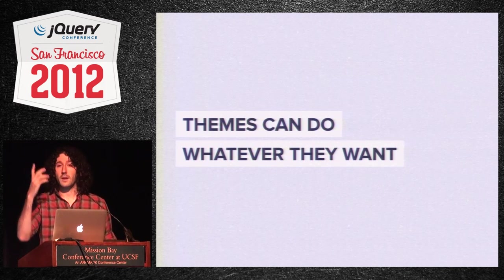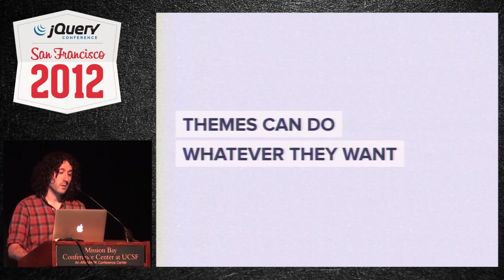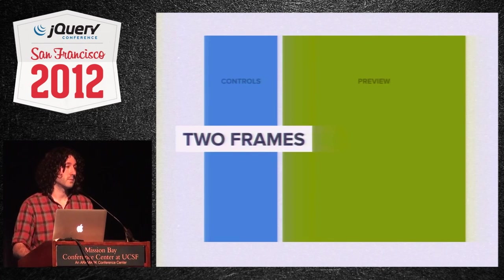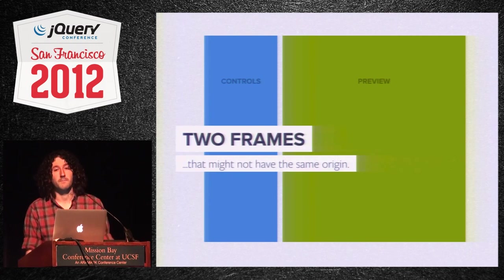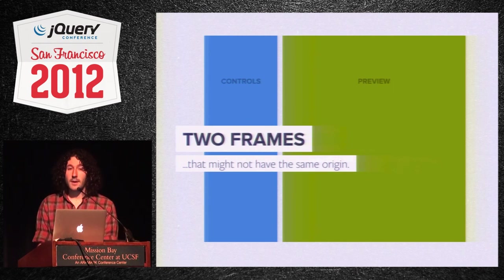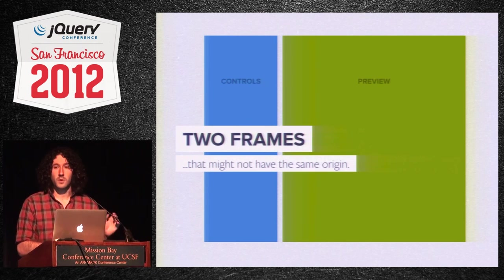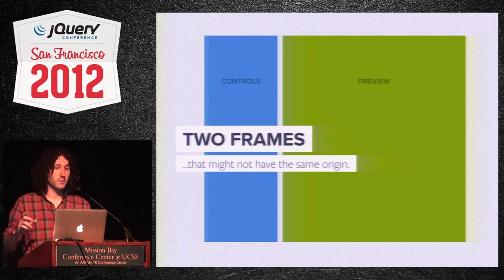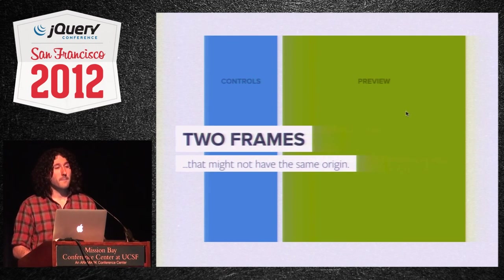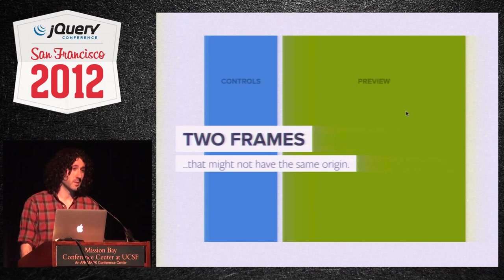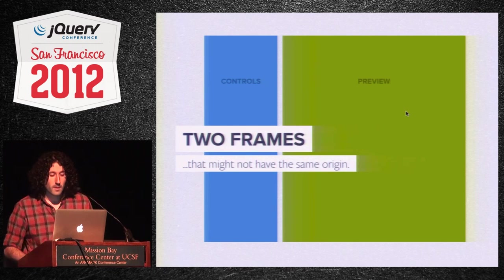We have two frames: the controls and the preview. The preview keeps refreshing. But here's the problem — they might not have the same origin. You might say, why not force one through the admin and one through the front end? We can't do that in WordPress without breaking everything. So we have to deal with same-origin policy, which is the browser's security fence. If a frame has a different port, different protocol, or different hostname, we can't talk to it.